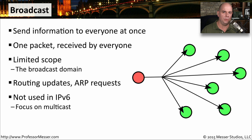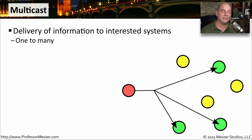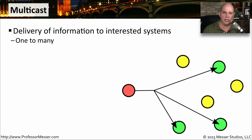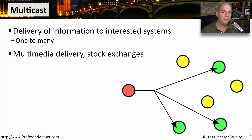A multicast is the middle ground. We're sending out information to a group of people, but not necessarily to everybody on the network, and not to a single person either. This is a one-to-many communication, and things like multimedia — especially real-time communication — and stock exchange information are often sent via multicast.